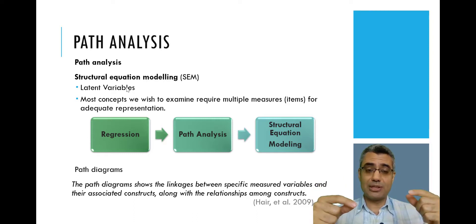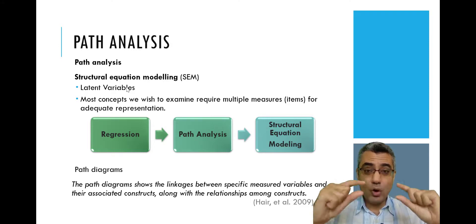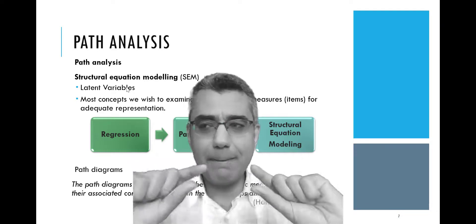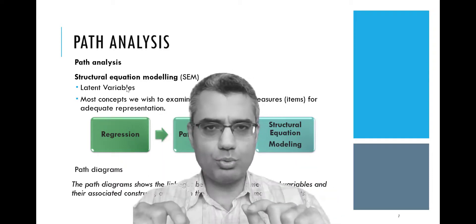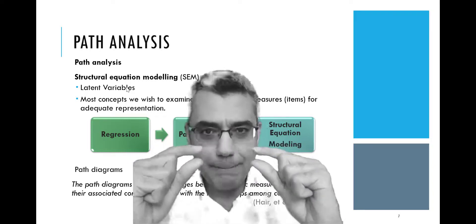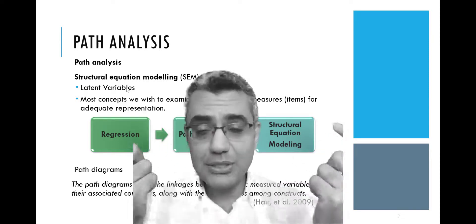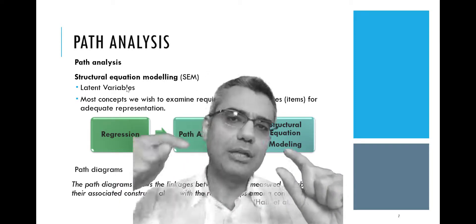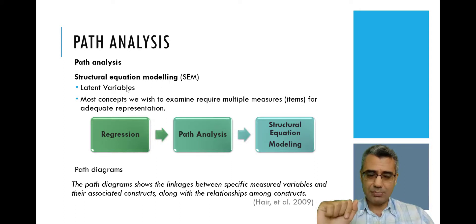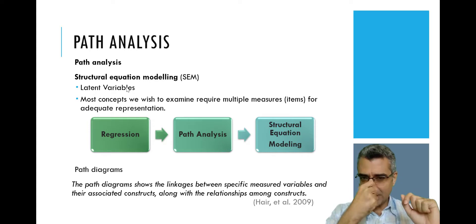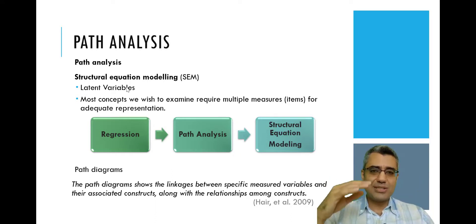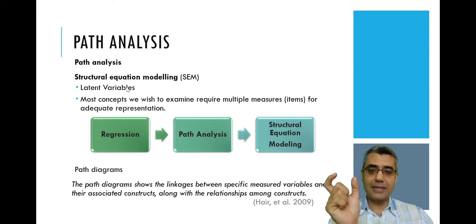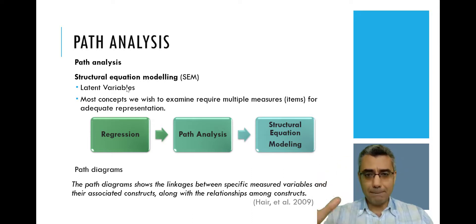In those studies using regression analysis for constructs, they converted constructs into observed variables by computing the average — the mean — of the scores to the five questions asked from respondents to measure satisfaction. They computed the mean of the responses and treated that mean as an observed variable. If you check SPSS, when you go to regression analysis, for each variable there is only one field — you cannot put several items for each construct. For satisfaction you have only one variable, which is the computed mean.